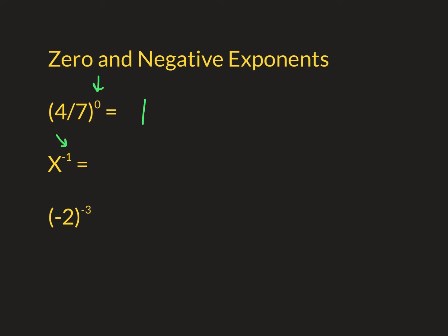Now, a negative exponent flips things. It makes it reciprocal. So if you see x to the negative one power, it's really just one over x to the first power, or one over x.